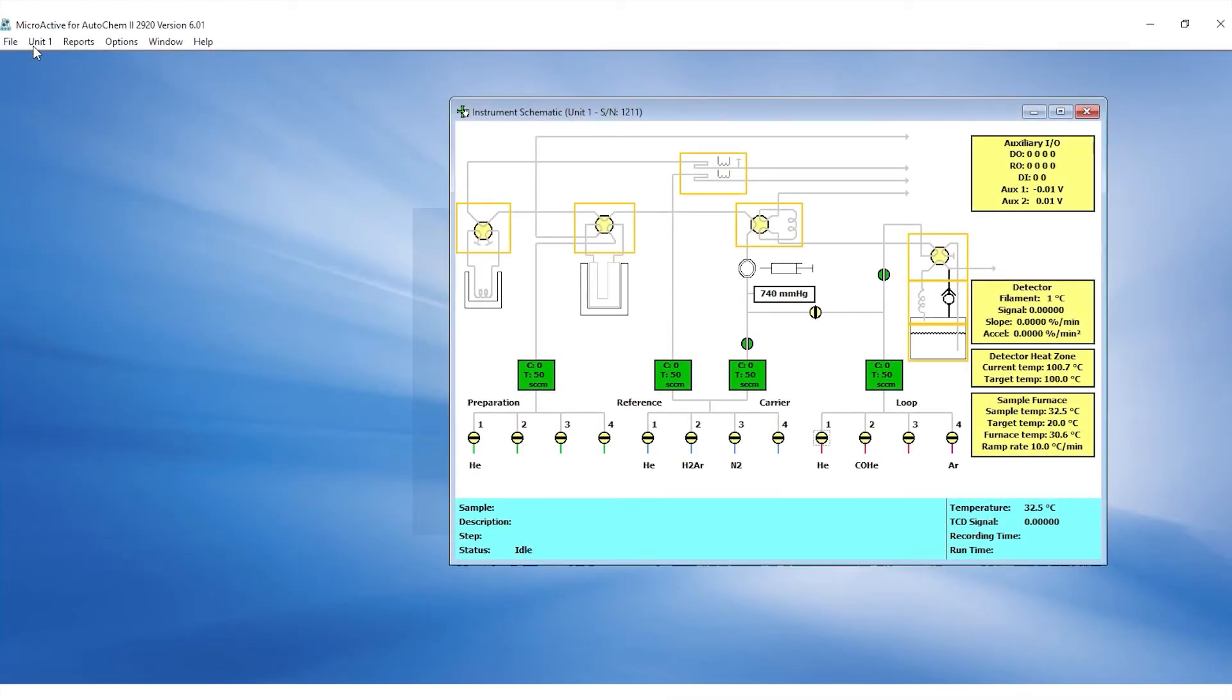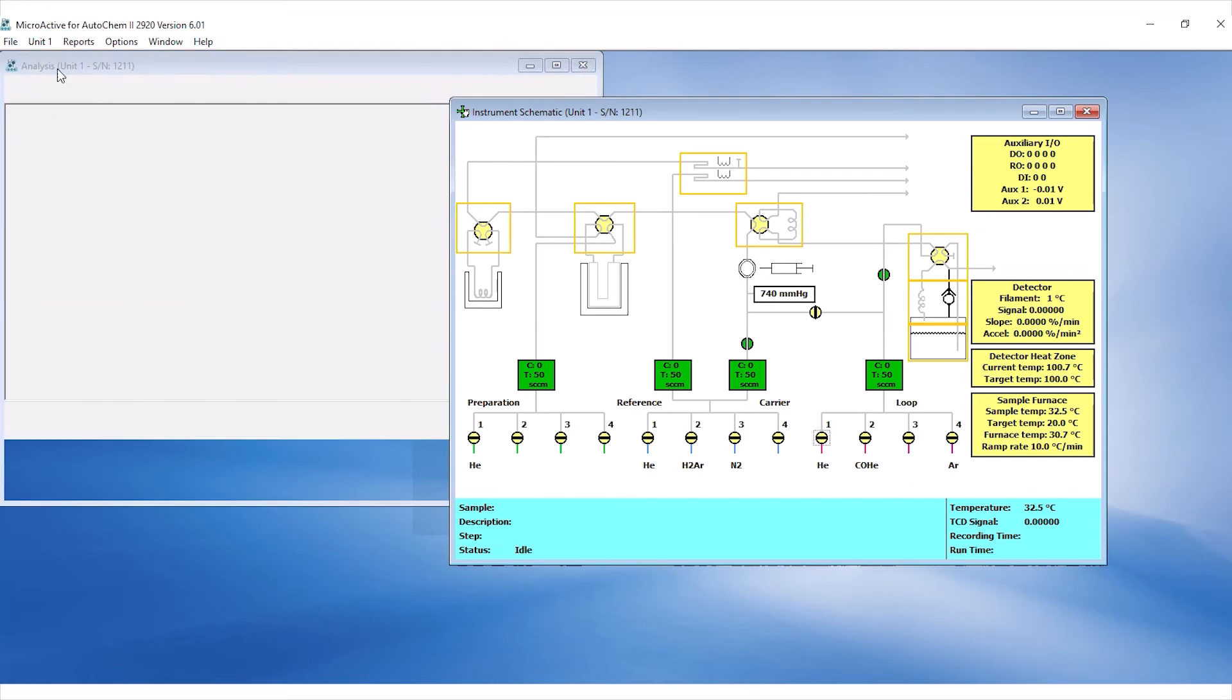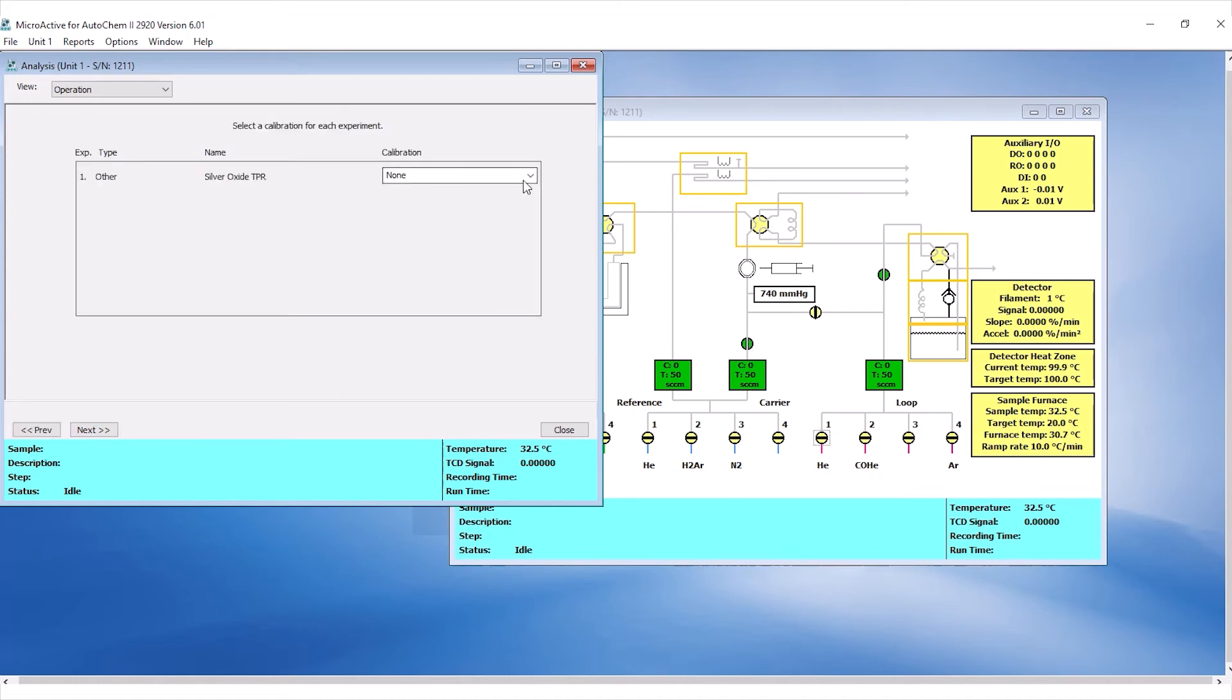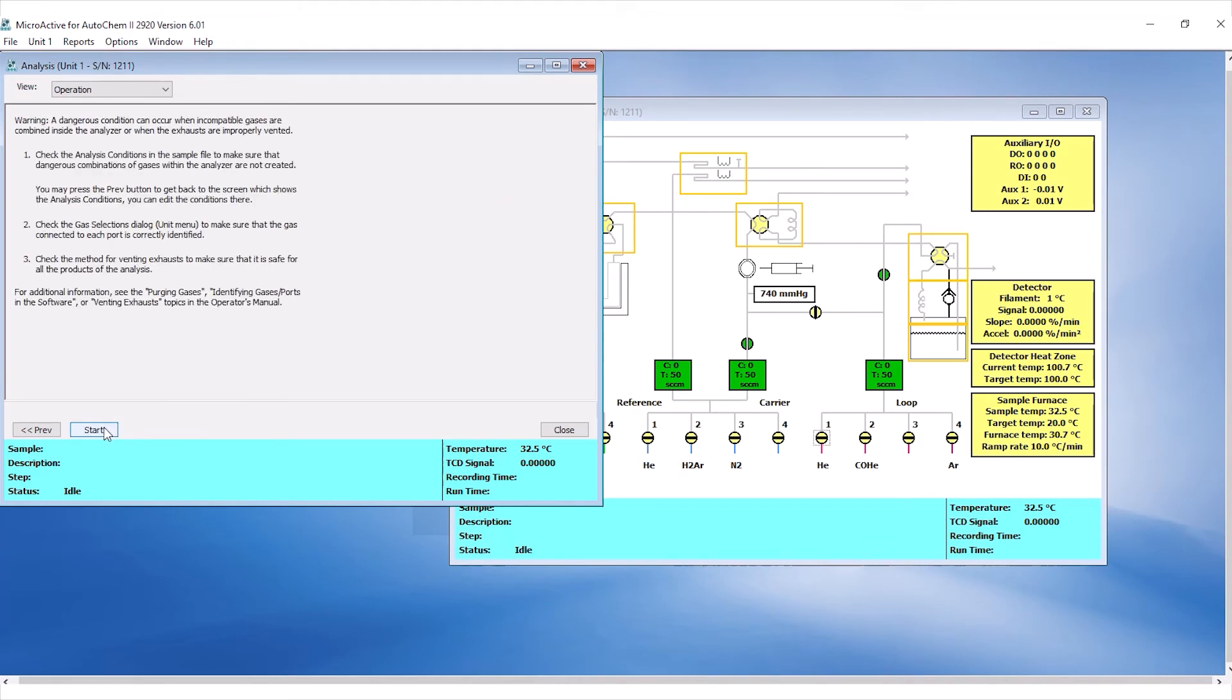To start the analysis, click on the Unit menu, Sample Analysis, and load the sample file. If you have a completed calibration file before analysis, you can select the appropriate calibration curve once starting the analysis. Click Next and then Start.